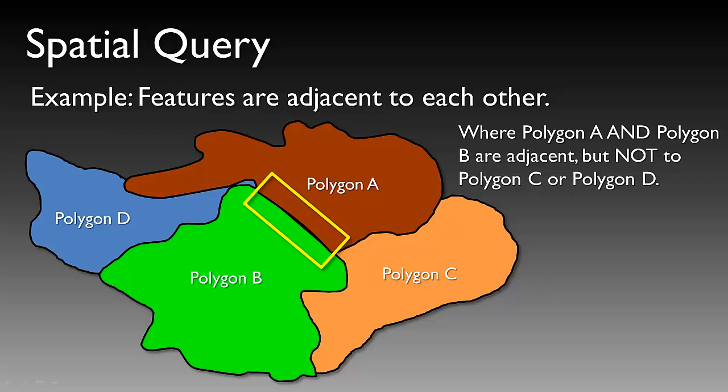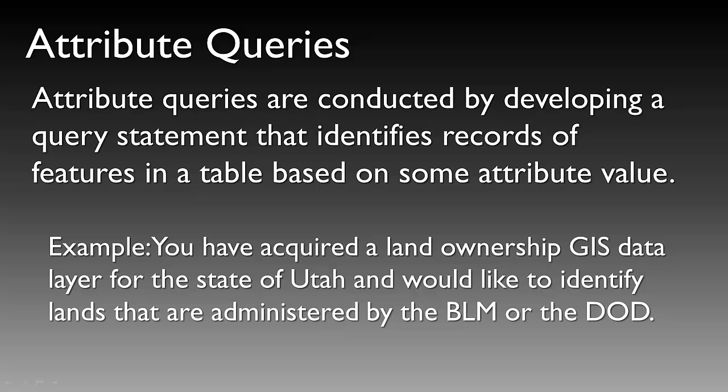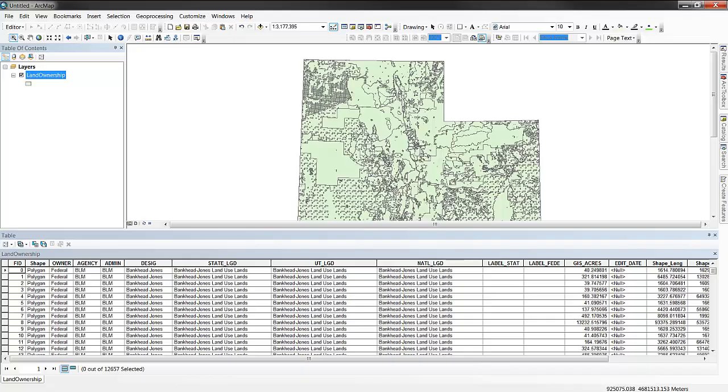Many spatial queries depend on the topological relationships between spatial features. Attribute queries are conducted by developing a query statement that identifies records of features in a table based on some attribute value. For example, you have acquired a land ownership GIS data layer for the state of Utah and would like to identify lands that are administered by the BLM or DoD. One could go through the table and identify each record individually, or one could conduct a query that would use the GIS to select those features of interest.